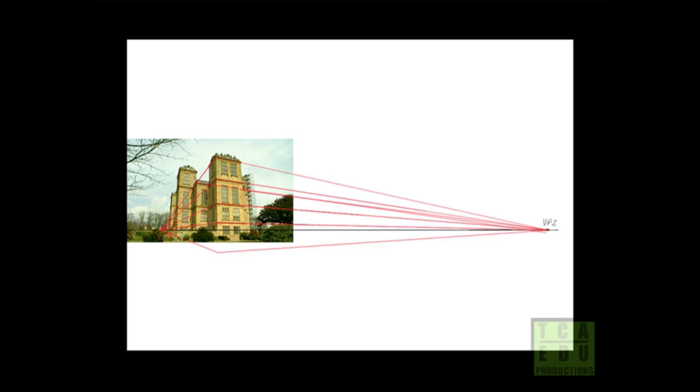This covers our first few rules, the first one being the corner at the front of the drawing can be accurate, and rule two which says the horizontal lines project back to one of two vanishing points.